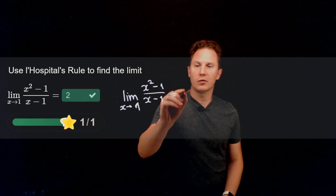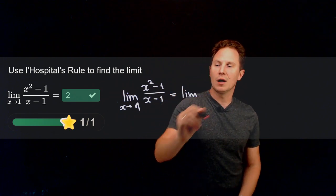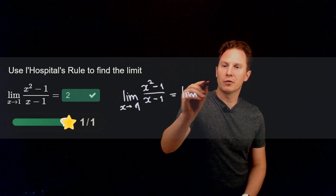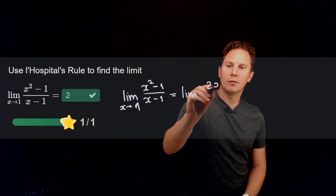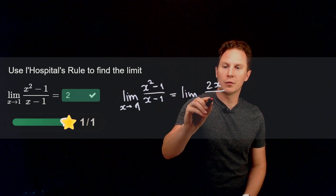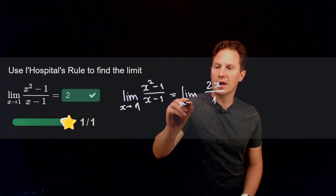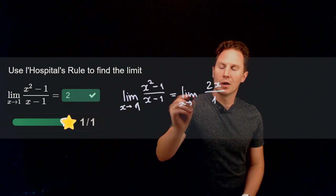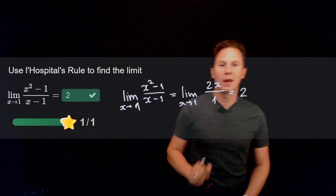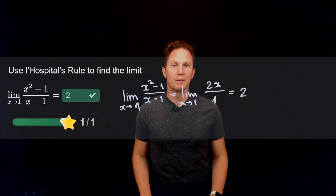We take this as the limit of the quotient of the derivatives. The derivative of x² minus one is 2x, and the derivative of x minus one is one. So as x approaches one, 2x approaches two. Hence two is equal to the limit.